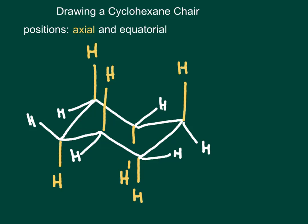Let's get some practice drawing cyclohexane chairs. We have one drawn here, and you can see right away that there are two distinct types of hydrogens on the cyclohexane chair. The ones drawn in yellow are pointing either straight up or straight down — those are described as the axial positions, or the axial hydrogens in this case.